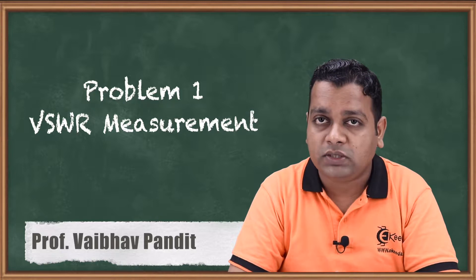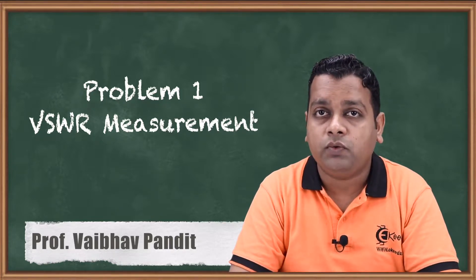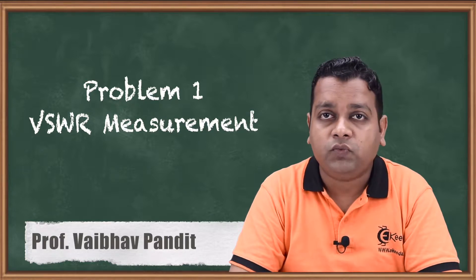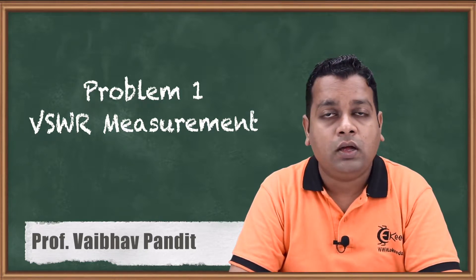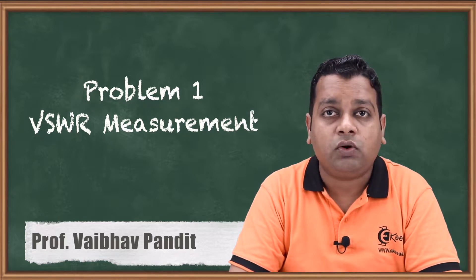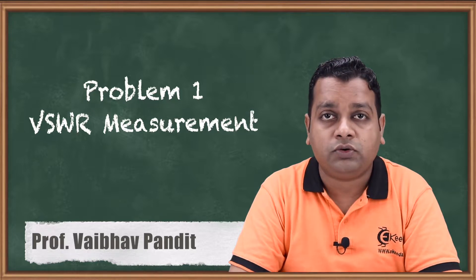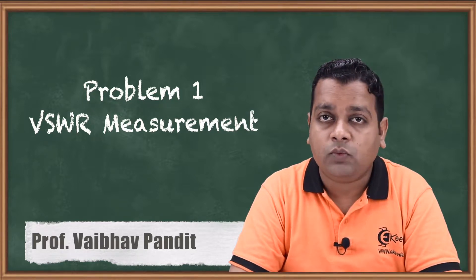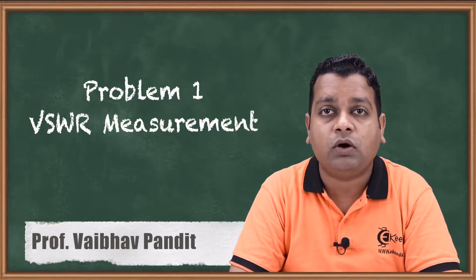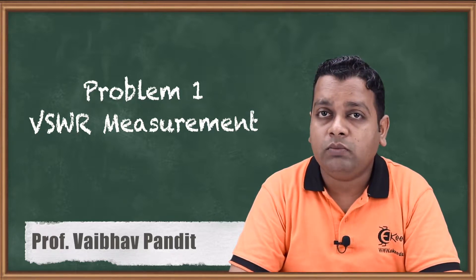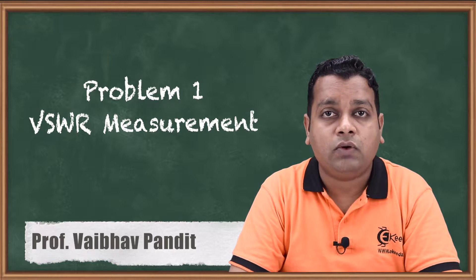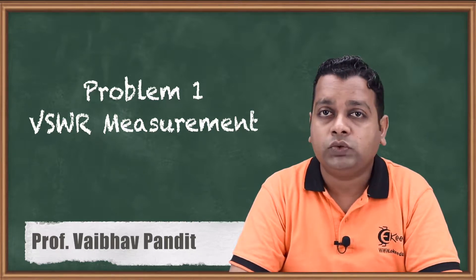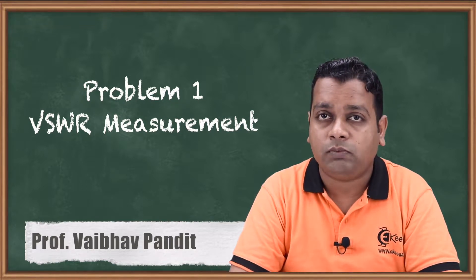We are with the 13th chapter of Microwave Engineering, titled Microwave Measurements. So far in this chapter, we have seen how low frequency measurements can be done. Next, we were introduced to the slotted line, a very important component in the Microwave Test Bench, as well as the tunable detector and its significance. We also covered the double minimum method for measuring VSWR. Based on all these understandings, let us have problem number 1.